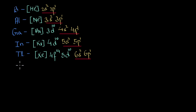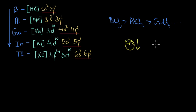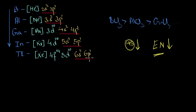Do you think the electron-deficient nature is the same for all group 13 elements? It actually decreases down the group — BCl3 is a better Lewis acid than AlCl3, which is better than GaCl3. One reason is that the stability of the +3 oxidation state decreases down the group. More importantly, electronegativity also decreases down the group. Since electronegativity is the tendency to attract an electron pair, a decrease means the Lewis acid nature also decreases — the compounds become less interested in accepting electrons. That is pretty much it about the electron-deficient nature of group 13 elements.